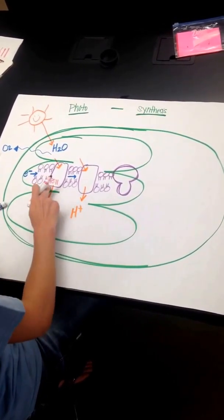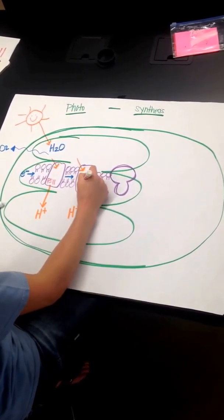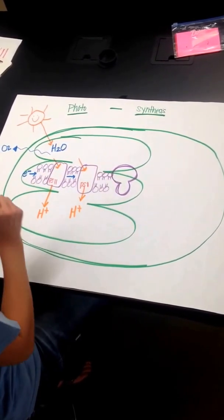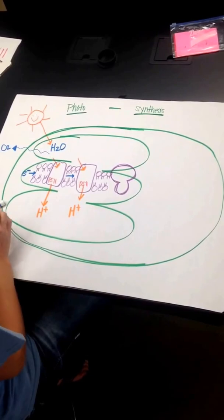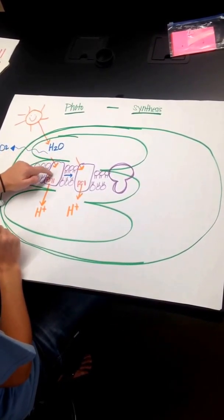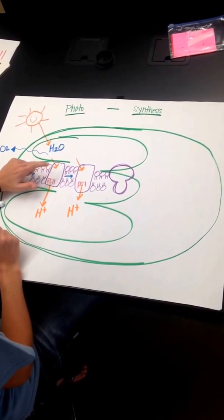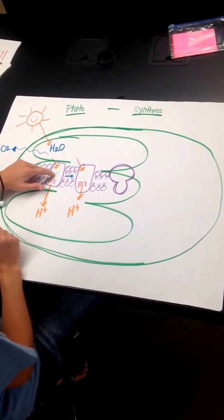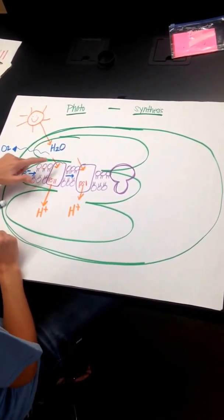This is photosystem 2. This is photosystem 1. They're named that way based off the way they were discovered. Photosystems are proteins that absorb light in the electron transport chain, and they're full of chlorophyll. Remember that chlorophyll is what gives plants its green color, and it's got magnesium in the center of it.